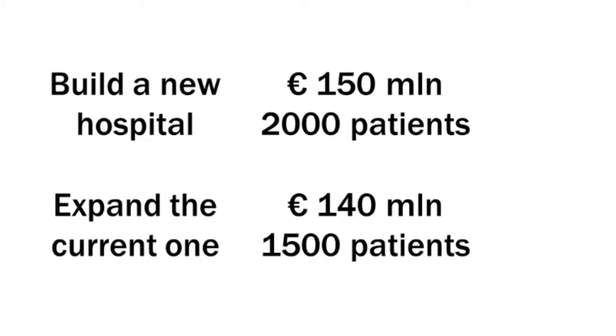A large body of evidence shows that frequently the status quo bias affects human decision-making. Imagine you are the local governor, and you are considering options for increasing the size of the region's hospitals. Your options are: build a new hospital for 2,000 patients at a cost of 150 million, or expand the existing one for 1,500 more patients at a cost of 140 million. In a famous experiment, 35% of respondents preferred the first option and 65% the second one.